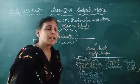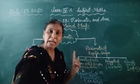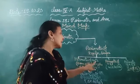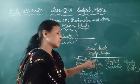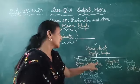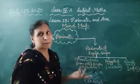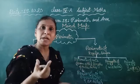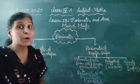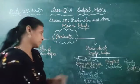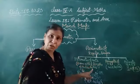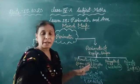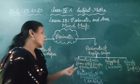You know about the triangle. Issmein kitni sides hoti hain bachchon? Three sides hoti hain. If we add these three sides, that is the perimeter. Kisi bhi triangle ki, agar hum teeno sides ko sum kar denge, toh humara kya find out ho jayega? Perimeter — the sum of the lengths of three sides. Is tarah se hum kisi bhi triangle ka perimeter find out kar sakte hain.